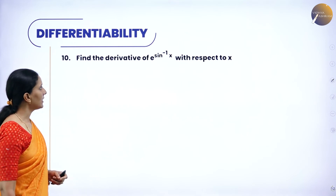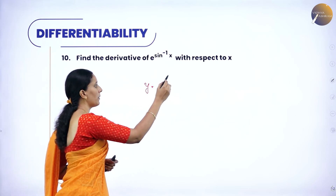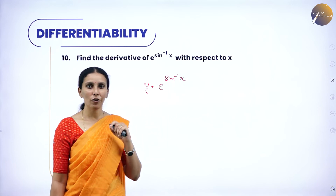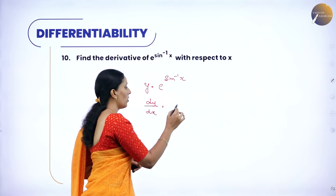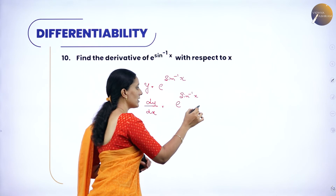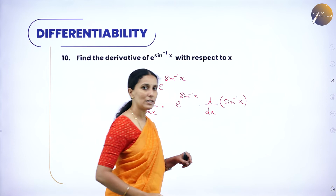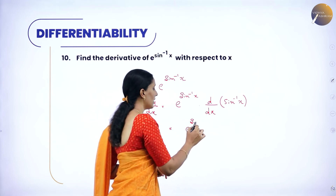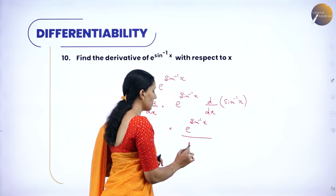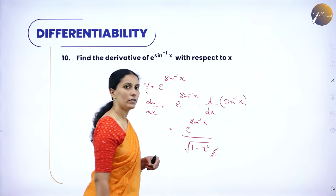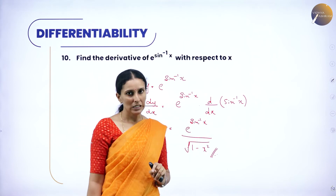Find the derivative of e^(sin⁻¹x) with respect to x. Let y = e^(sin⁻¹x). The derivative of e^x form is e^x form only, so dy/dx = e^(sin⁻¹x). But sin⁻¹x is another function, so derive it: the derivative of sin⁻¹x is 1/√(1 − x²). Therefore, the derivative is e^(sin⁻¹x) / √(1 − x²).